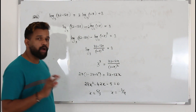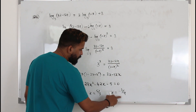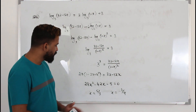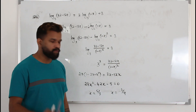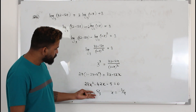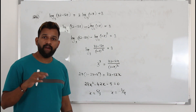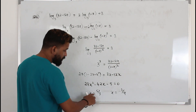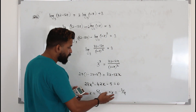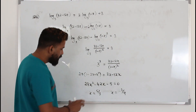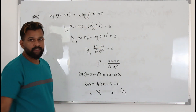Now, the most common mistake here: once you get the x values, you cannot just leave it like that thinking that both are solutions — that's wrong and you are going to lose marks. You will always get one or two x values, but we need to find the right solution. We need to make sure they are correct by plugging these values back into the original equation.